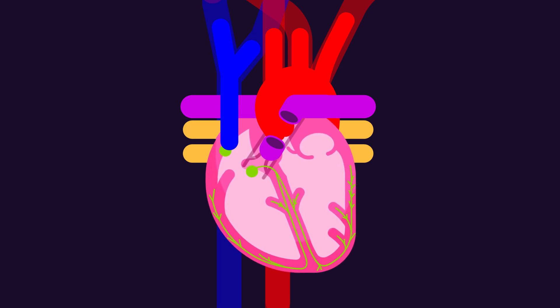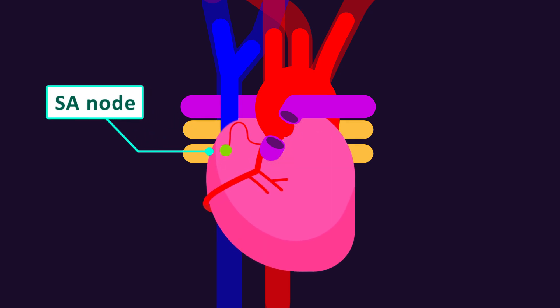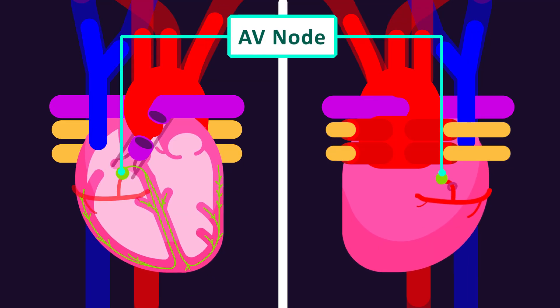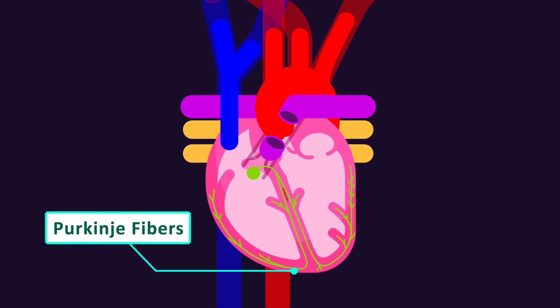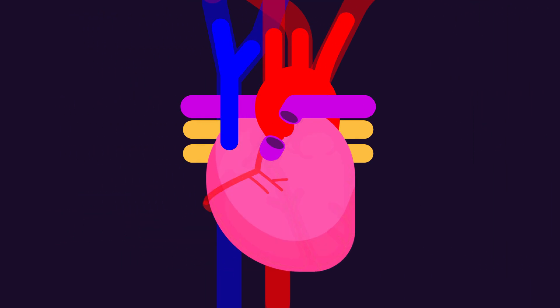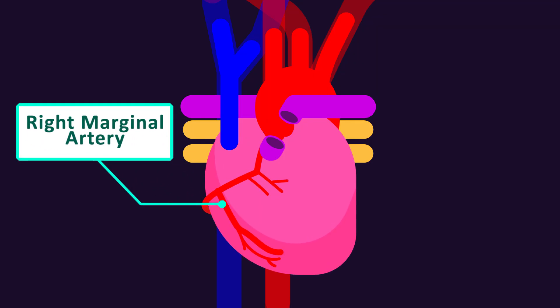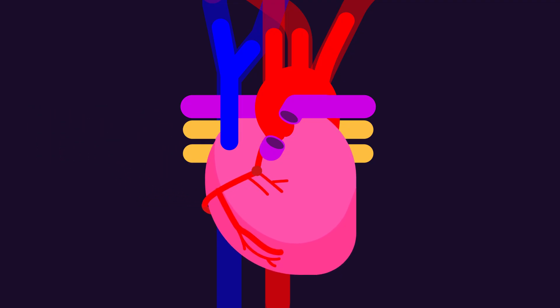RCA supplies the SA node, the AV node, and the Purkinje fibers. The major branch of RCA arises at the inferior margin of the right ventricle and is called the right marginal artery.